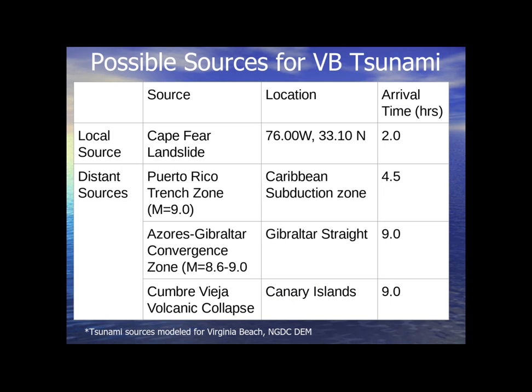These would be some possible tsunami sources if we were to have one here in Virginia Beach. The arrival times give us hours to prepare and get inland. The only local source would be around Cape Fear — a landslide there would take about two hours for the wave to get here. We might see some smaller waves in the meantime, and the size of the landslide would determine the size of the tsunami.